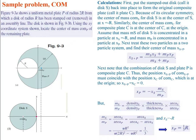First, put the stamped-out disk S back into place to form the original plate, which we'll call C. Because of its circular symmetry, the center of mass of S is at its center, so that's at x equals negative r. The center of mass of C, the composite plate, is at the center of C, which is at the origin. So for the big disk with S back in place, the center of mass is at the origin.